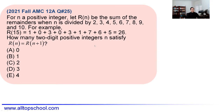For n, a positive integer, let r(n) be the sum of the remainders when n is divided by 2, 3, 4, 5, 6, 7, 8, 9, and 10. For example, r(15) equals 26: remainder 1 when divided by 2, remainder 0 by 3, remainder 3 by 4, remainder 0 by 5, remainder 3 by 6, remainder 1 by 7, remainder 7 by 8, remainder 6 by 9, remainder 5 by 10. Adding these up gives 26.